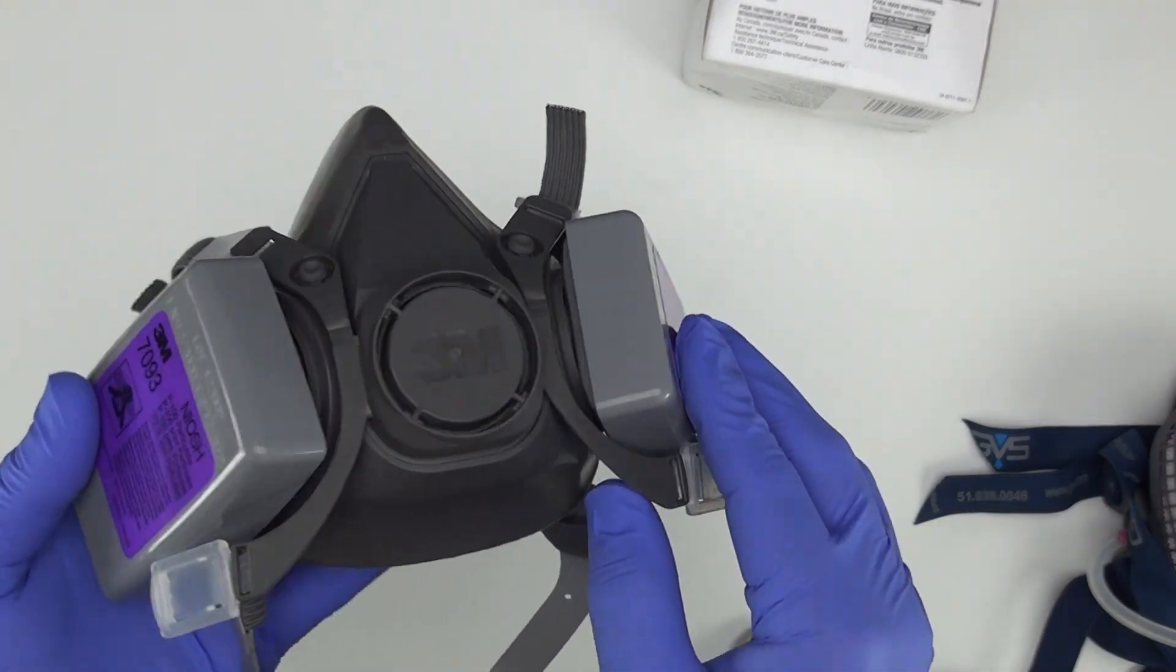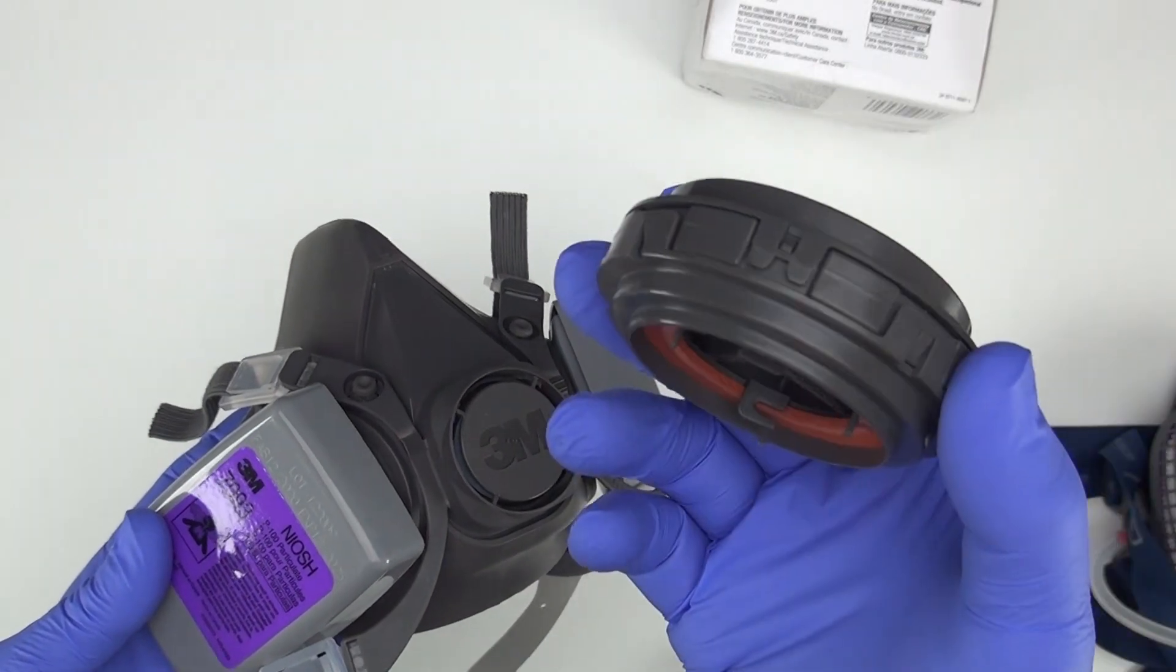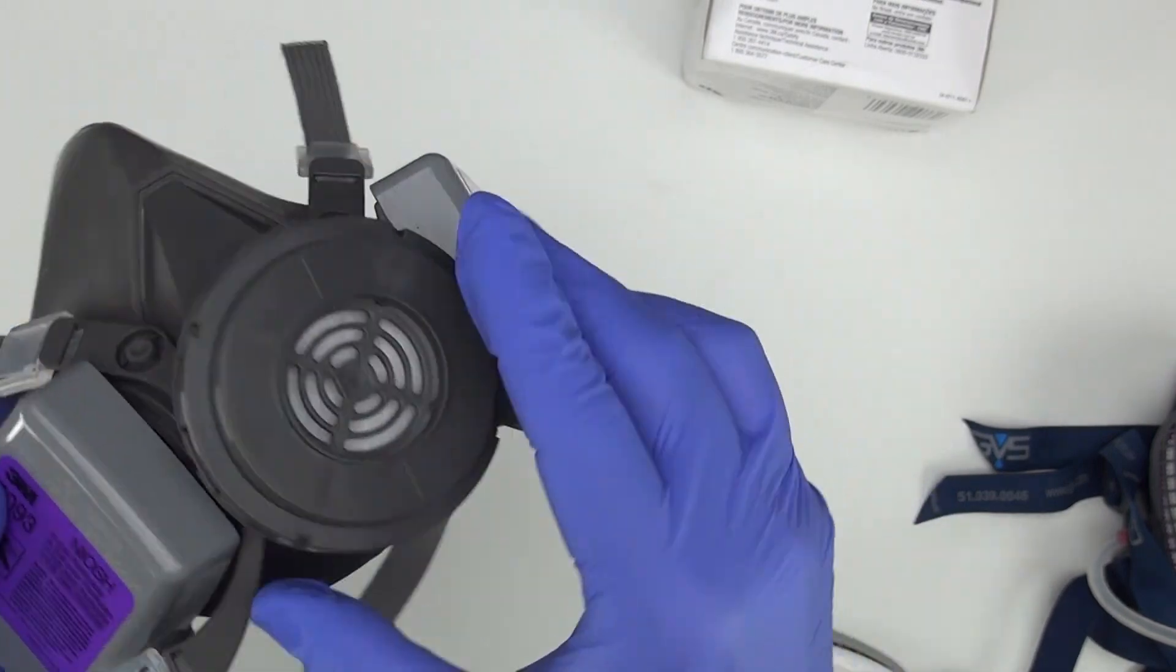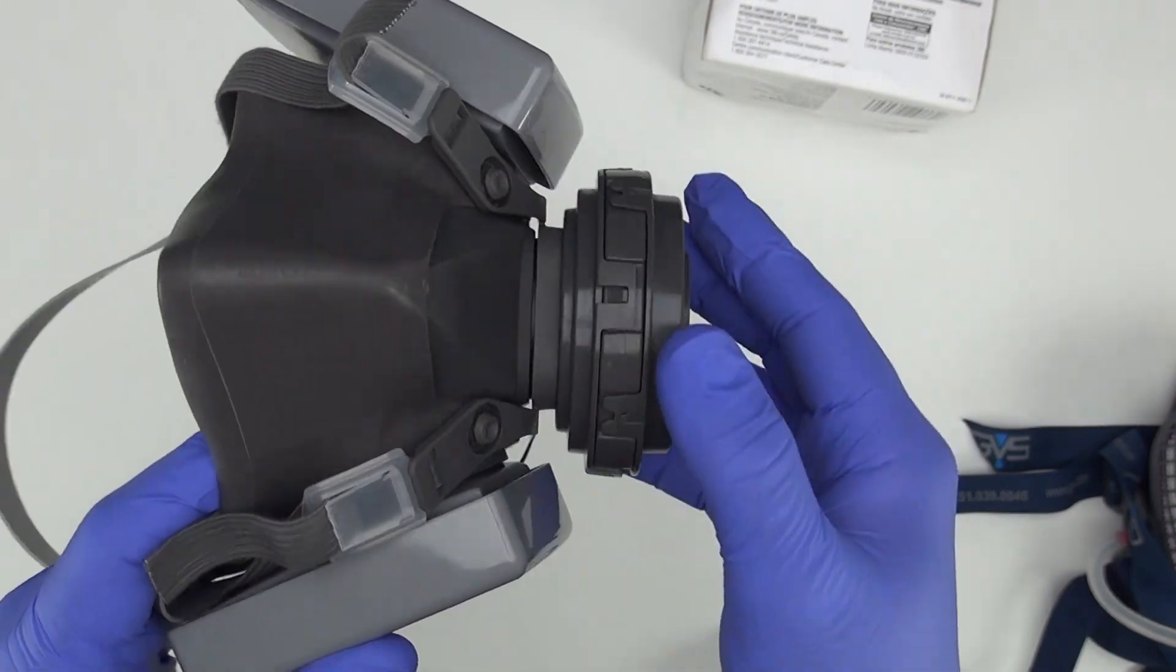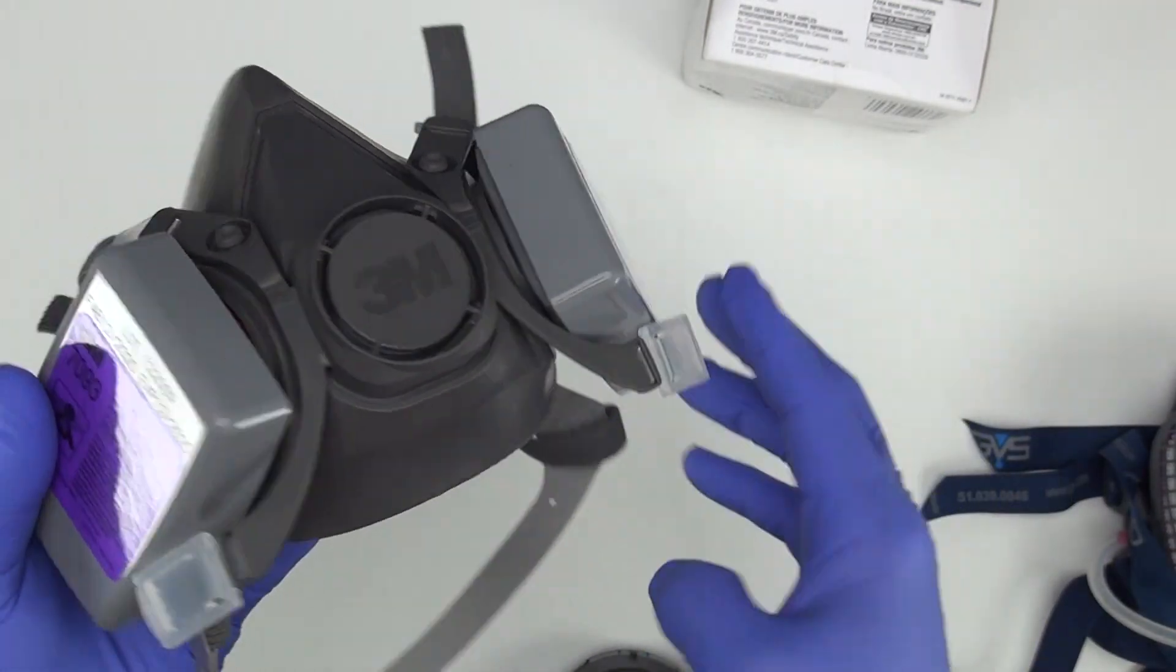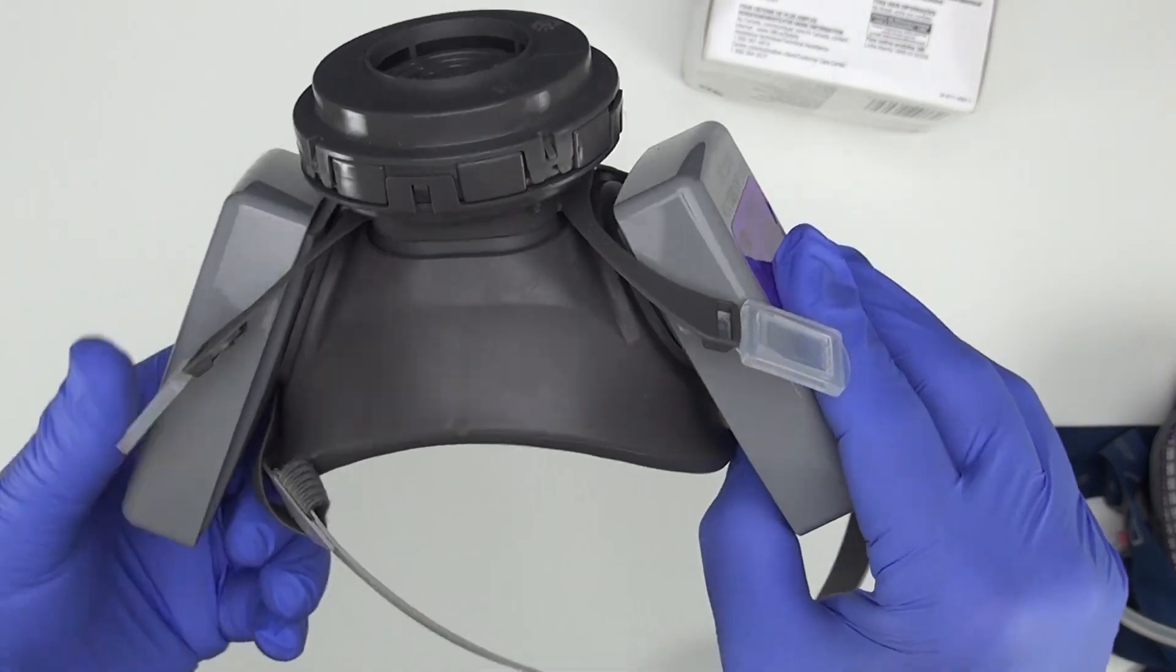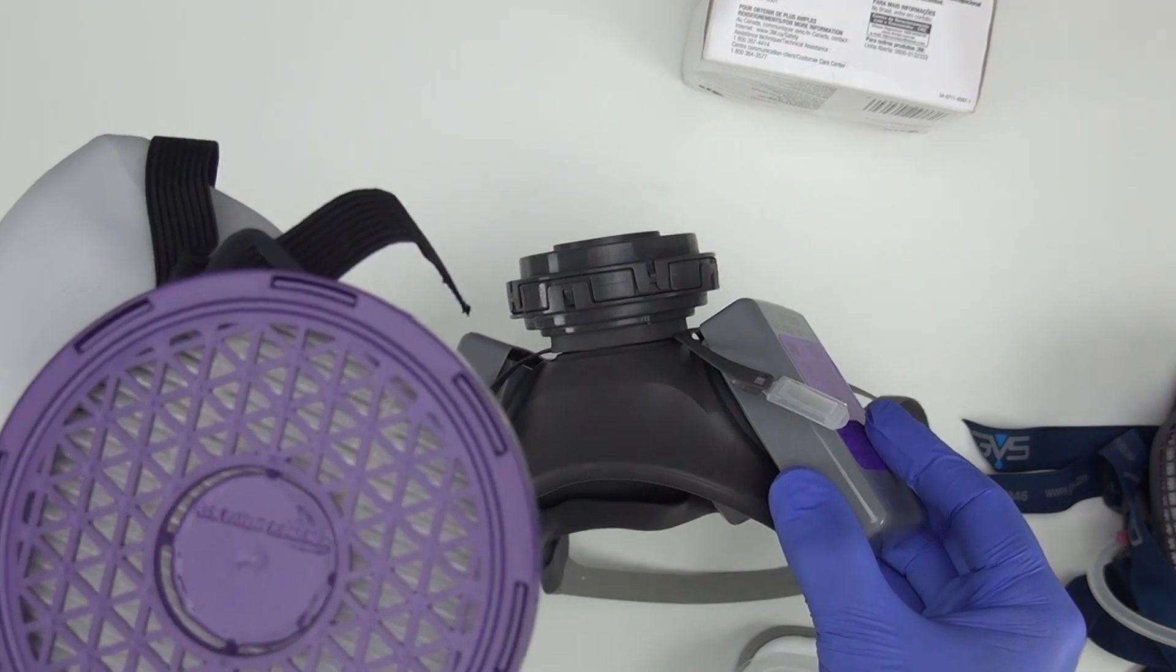Getting back to the 3M, you can make this into a source control mask. You can buy this separate 604 exhalation valve filter. By putting it on the exhalation port, you can create a source control mask. And when you don't need a source control mask, you can take this off. But it does make the mask bulkier. You now have kind of a gigantic mask. And it's not quite as easy to breathe through these P100 filters as it is the Dentec. These are a little bit more breathable.